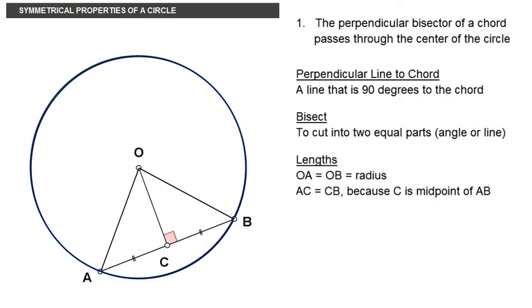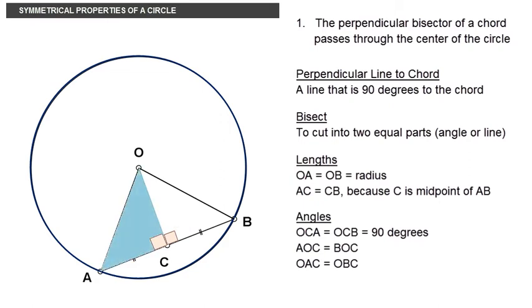In terms of angles, OC being perpendicular to AB, OCA and OCB are right angles, that is 90 degrees. With the two triangles OAC and OBC being similar, AOC and BOC are equal and OAC and OBC are equal.